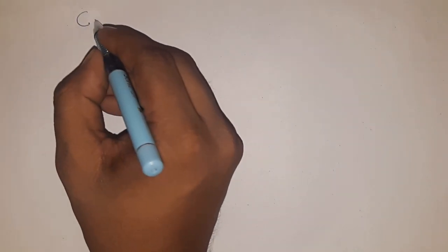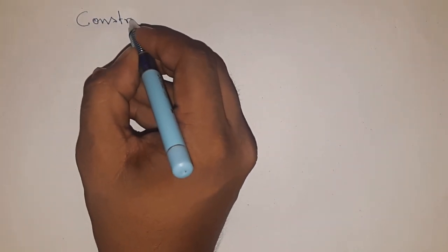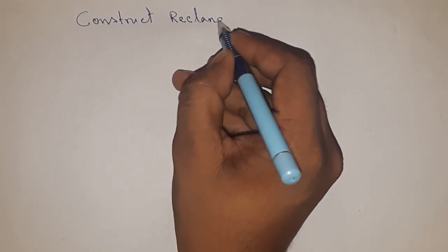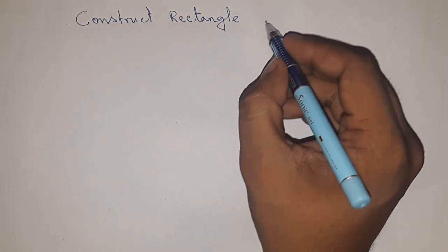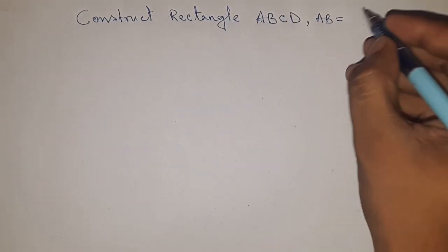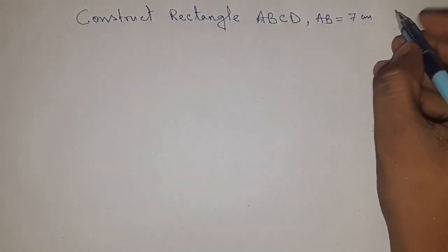Hi everyone, welcome to SSR Classes. Today we're talking about the construction of rectangle ABCD with AB equal to 7 centimeters and BC equal to 5 centimeters. Before starting the video...